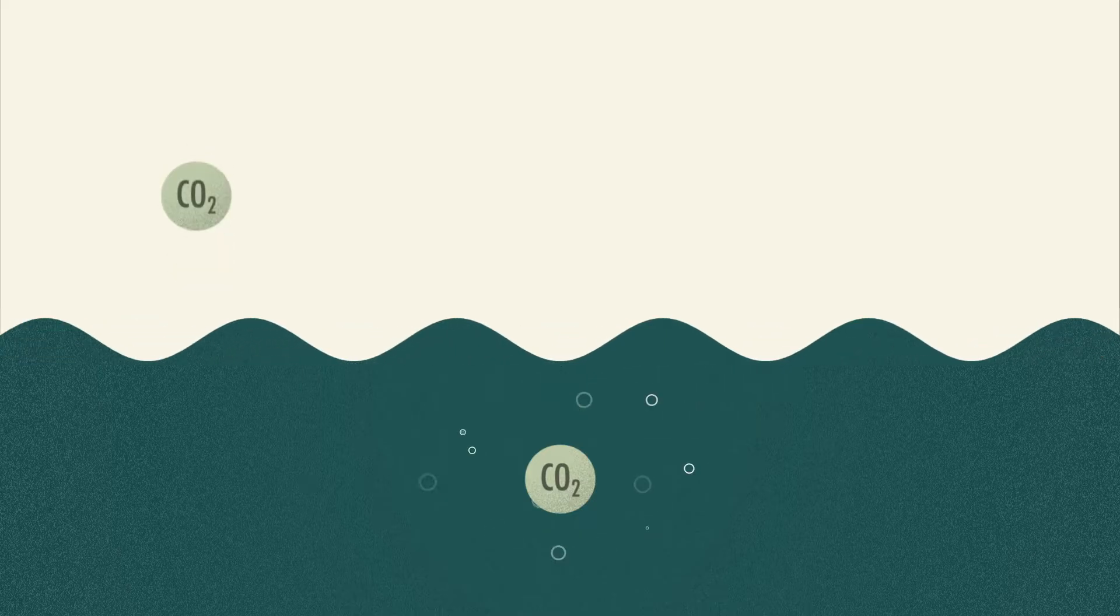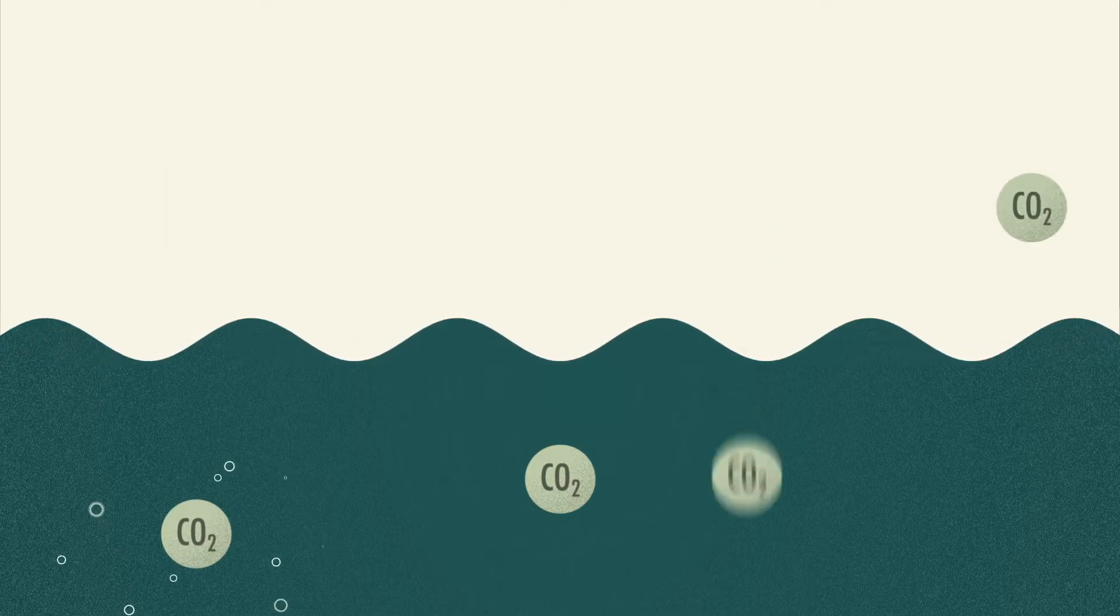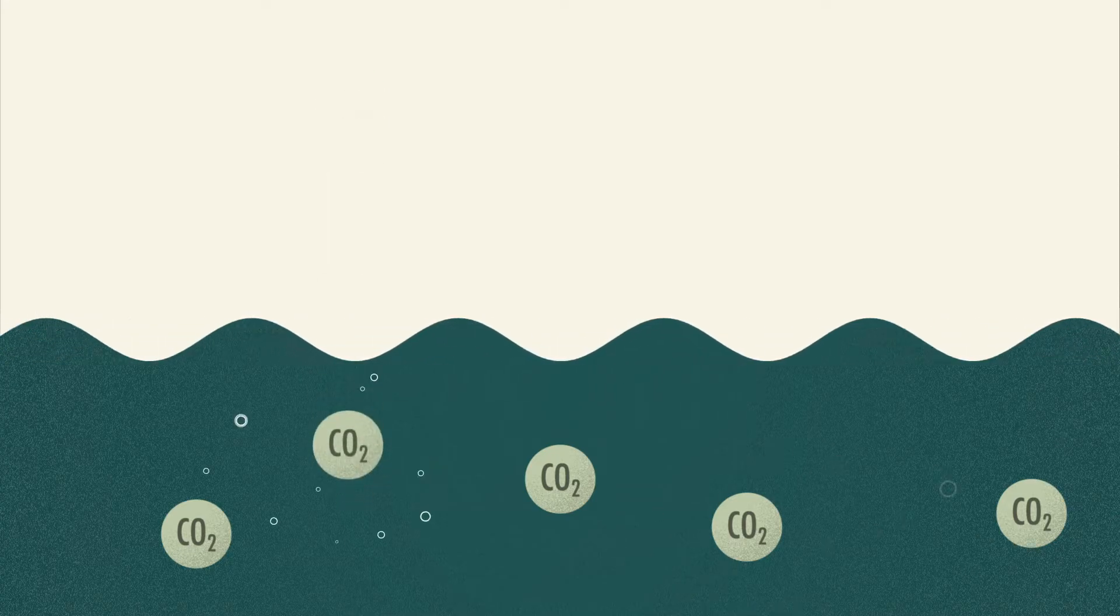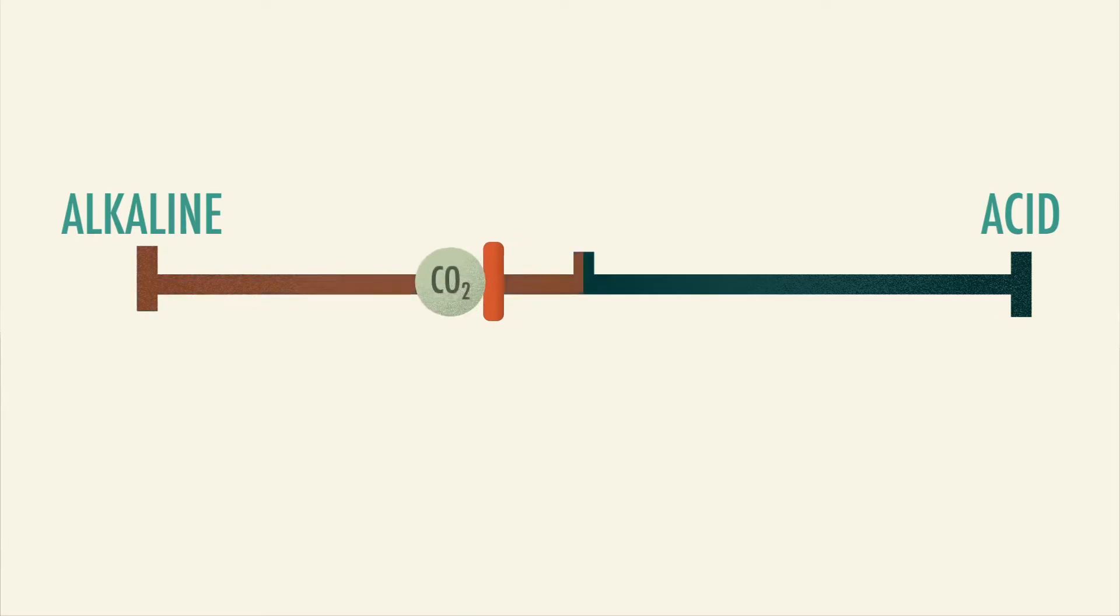Ocean acidification occurs when CO2 gas dissolves in the ocean and chemically reacts with the seawater. However, scientists have specified that the CO2 reacting with the seawater will not make the ocean into a pool of acid, but will remain as an alkaline substance.